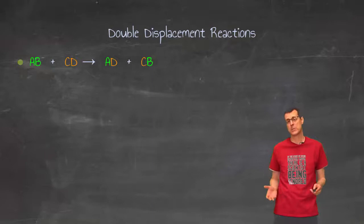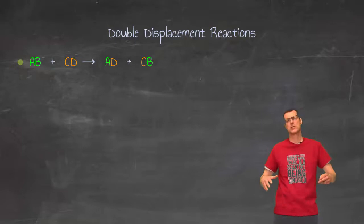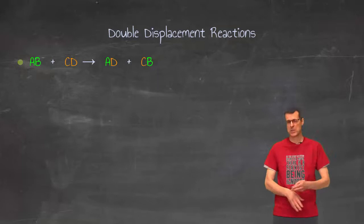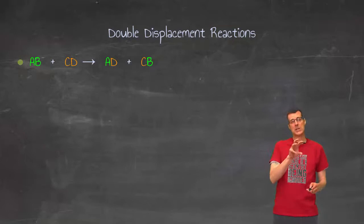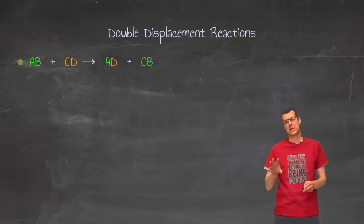Now you can either think of it as two first things switching around, switching places, or the two second things switching places, but one of the key things is if the element that is showing up first in the first compound, it is still going to be the first element on the product side.